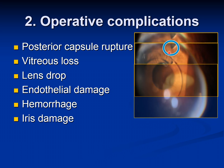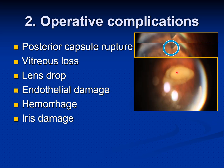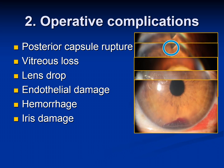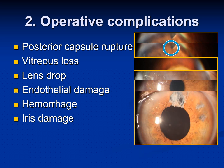During the operation, the lens can drop to the back of the eye — you can see the lens in the vitreous cavity with the retina red reflex in the background. During surgery, you can cause endothelial damage from which the patient usually recovers, but if excessive, may not recover. There can also be hemorrhage in the anterior chamber — hyphema — or iris damage, which is managed accordingly and normally doesn't need treatment.